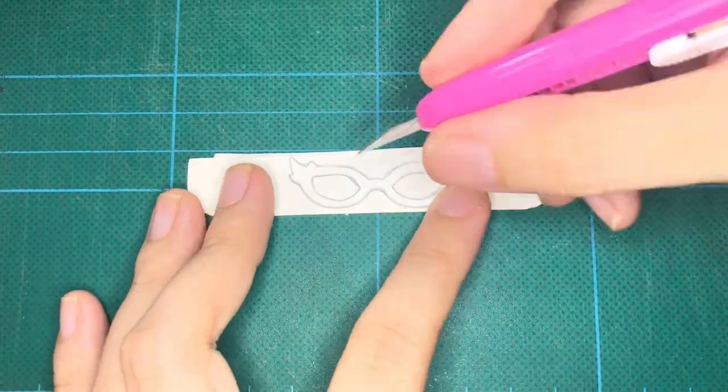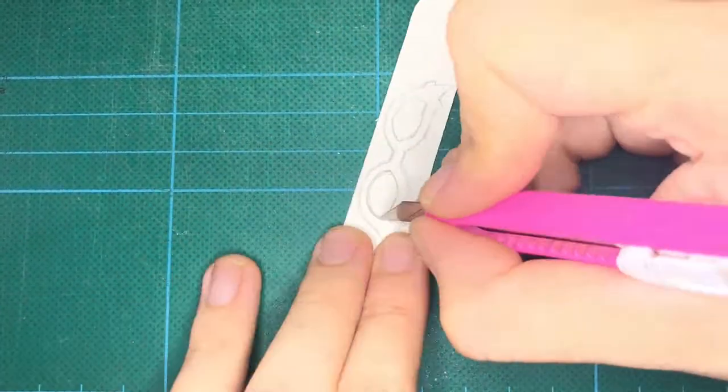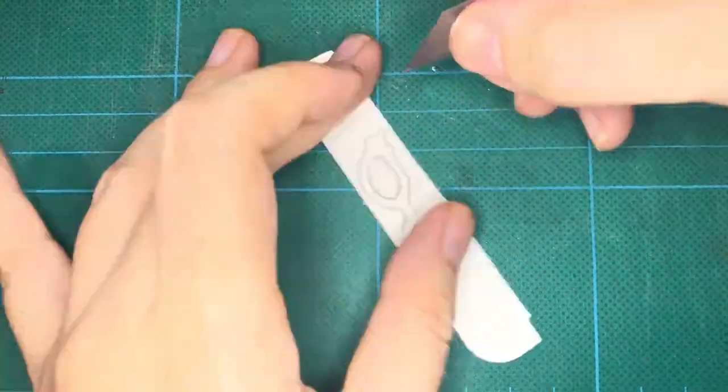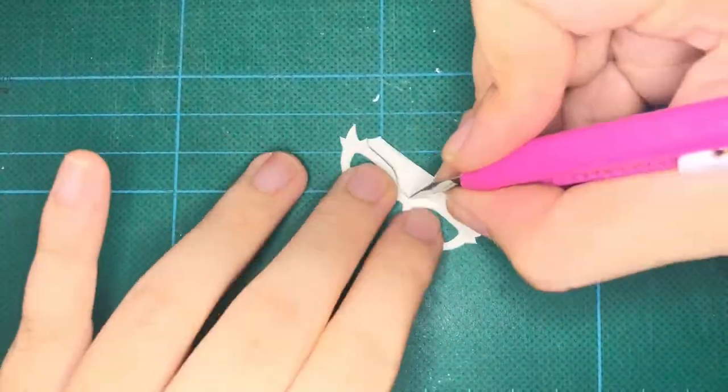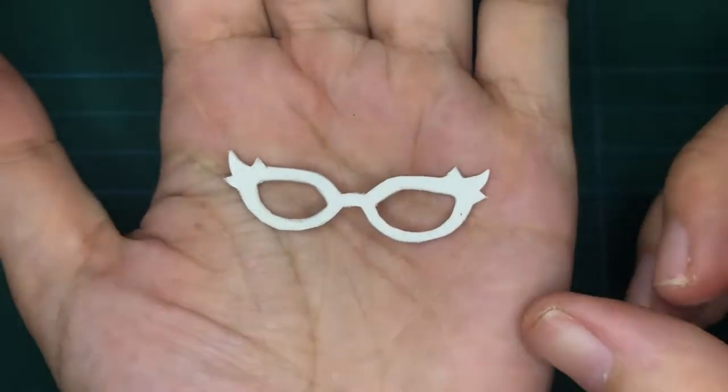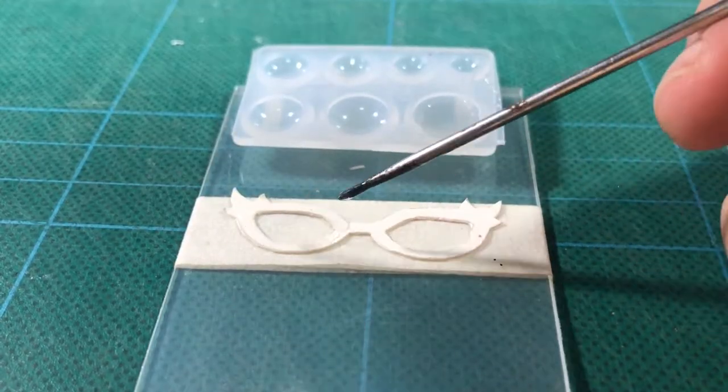Then, trace it again on any thick paper that you have. I just use a medicine box here. Next, I use an X-Acto knife to cut the glasses frame and handles out. Spread UV resin on it and cure.